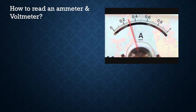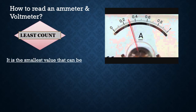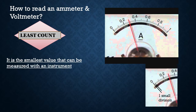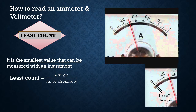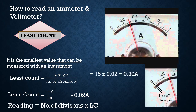To read an ammeter or voltmeter, we first find its least count — the smallest value that can be measured with the instrument. Least count equals range divided by number of divisions. For the ammeter shown, the range is 0 to 1 ampere and there are 50 divisions, so least count equals 1 minus 0 divided by 50, which is 0.02 ampere. The reading equals number of divisions multiplied by least count. With the pointer on the 15th division: 15 times 0.02 equals 0.30 ampere.